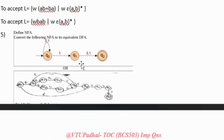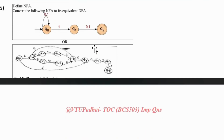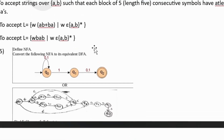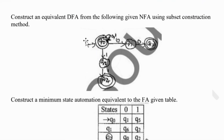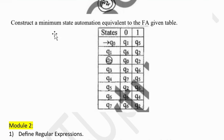Next, we have define NFA and conversion of NFA to equivalent DFA using subset construction method. This is again a very easy topic. Next, we have construct an equivalent DFA from a given NFA using subset construction — again an easy topic.